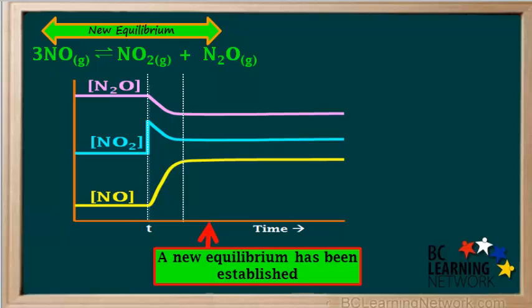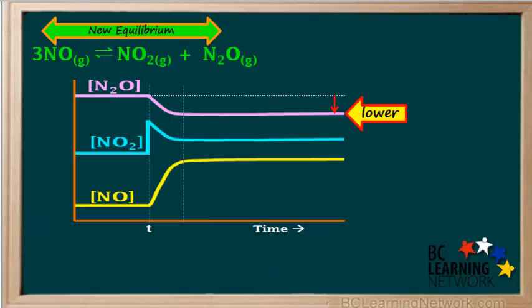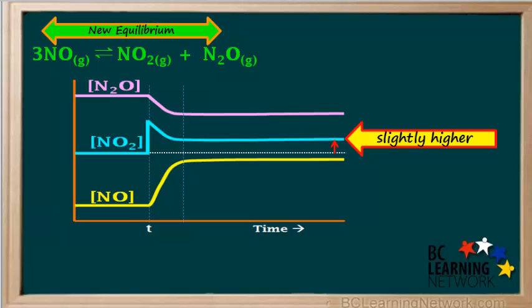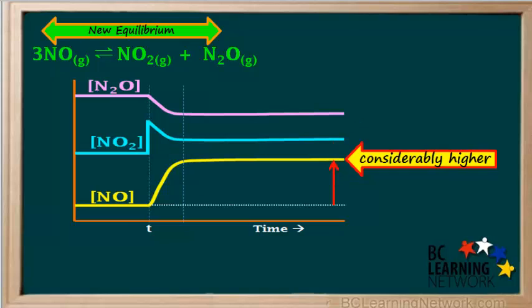In the section past the second dotted line, a new equilibrium has been established and concentrations are again constant. In the new equilibrium, the concentration of N₂O is lower than it was in the original equilibrium — it was never added to the mixture, but its concentration decreased during the shift to the left. The concentration of NO₂ is slightly higher than in the original equilibrium: its concentration was increased at time T, then partially decreased as the equilibrium shifted left and the stress was counteracted, resulting in a small net increase. The concentration of NO went up three times as much as the two products went down, so its concentration in the final equilibrium is considerably higher than in the original equilibrium.